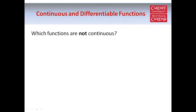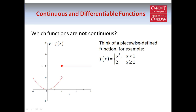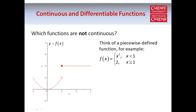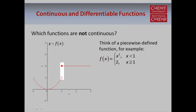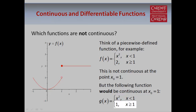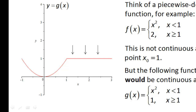You might be wondering which functions are not continuous. An example of a discontinuous function is one defined in a piecewise manner — defined one way when x < 1 and another way when x ≥ 1. You can't draw this function without taking your pen off the paper because there's a jump at x₀ = 1, so the function is not continuous there. But a piecewise definition doesn't necessarily mean discontinuous: if we change the function so there's no jump at x = 1, then the function is continuous at all points including x₀ = 1.